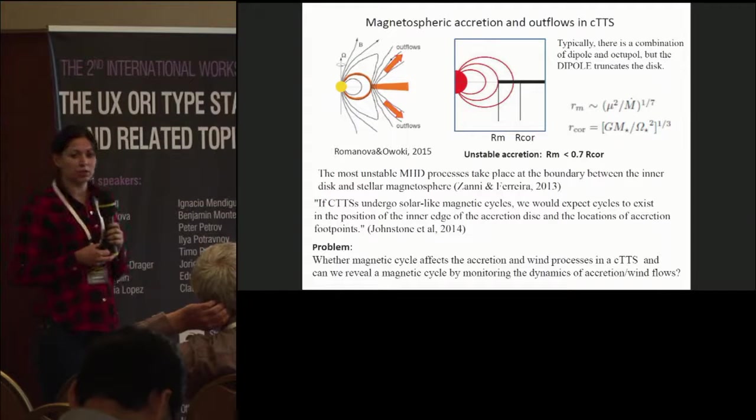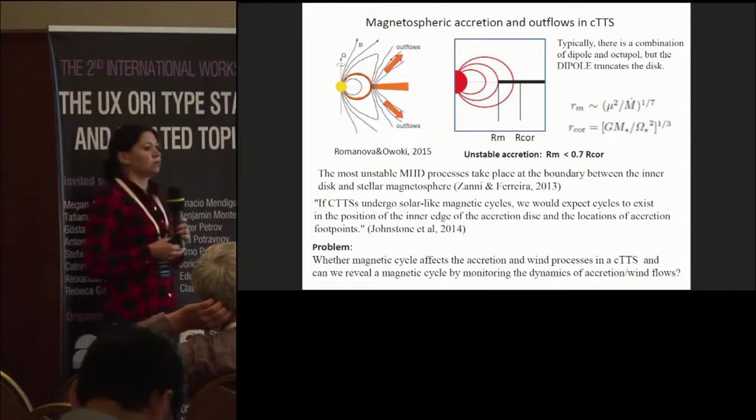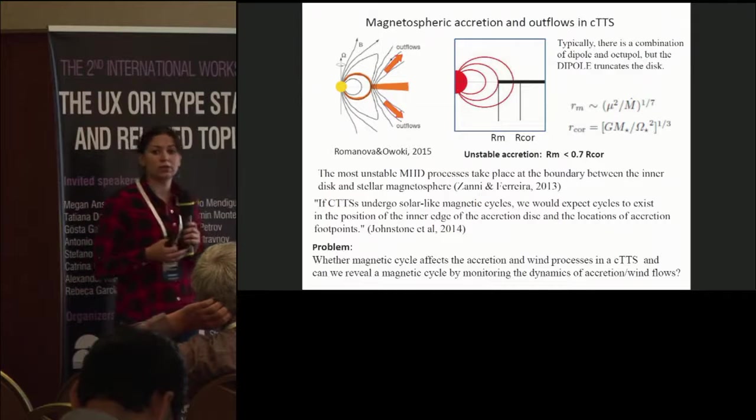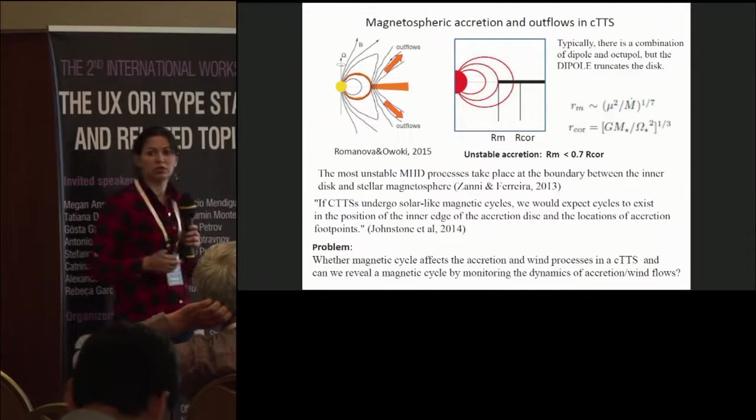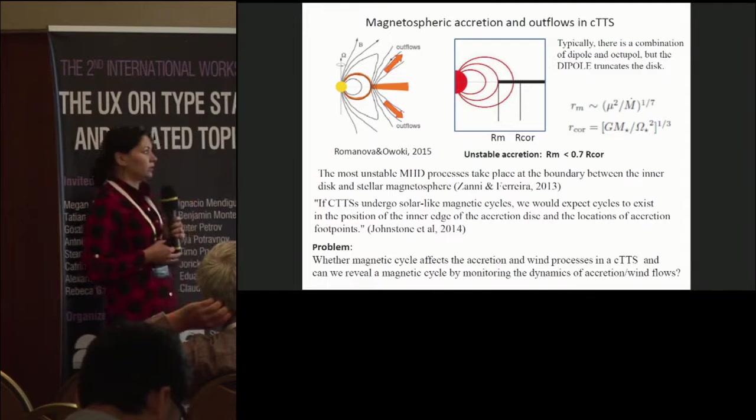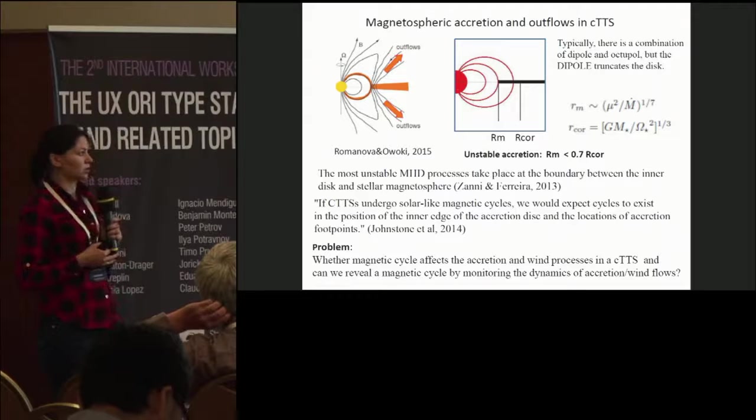In solar cycles of activity, dipole component can change drastically. So, if classical T-Tauri stars undergo solar-like magnetic cycles, we would expect cycles to exist in the position of the inner edge of the accretion disk.